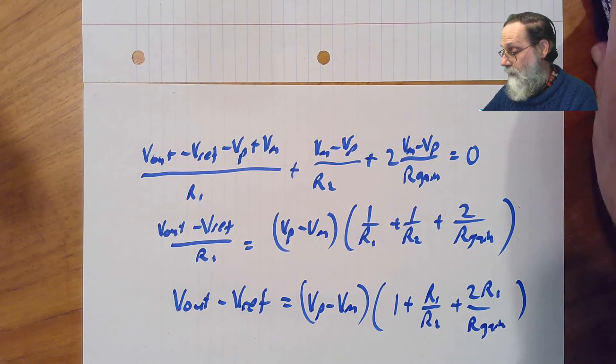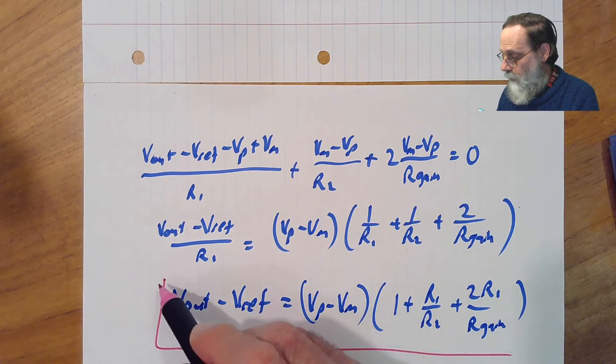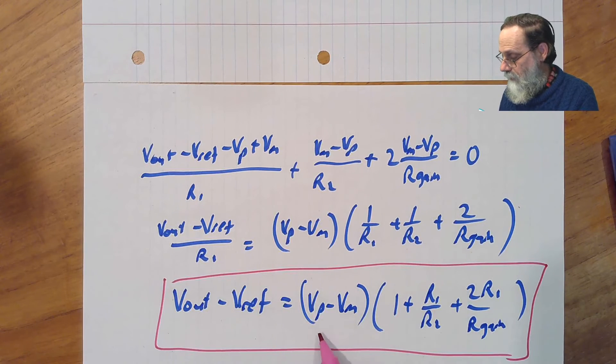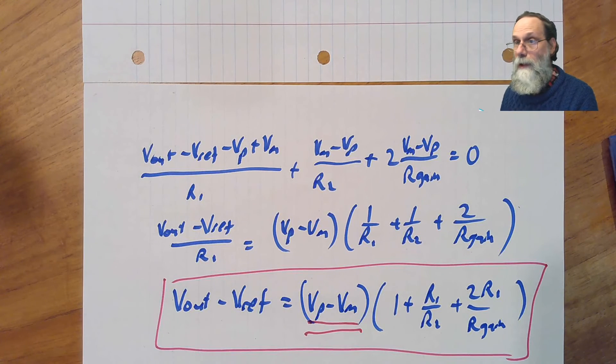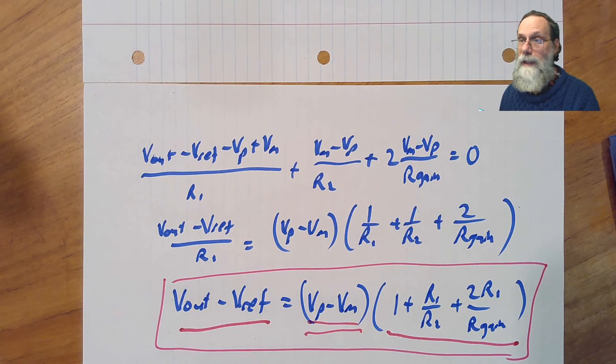And that is exactly the form we want for an instrumentation amplifier, because what we have is the differential signal here multiplied by a gain to get our single ended output referenced to vref. That's our instrumentation amplifier.